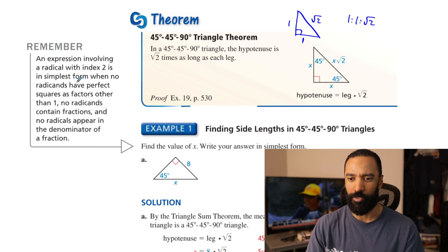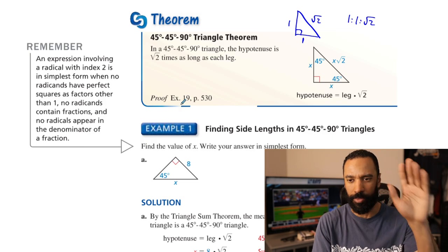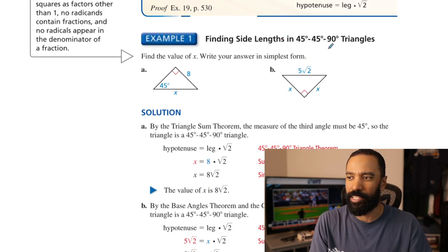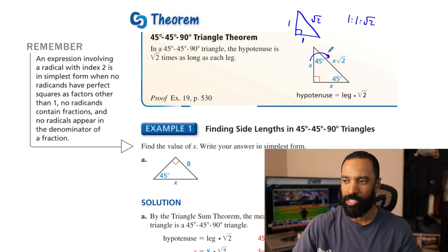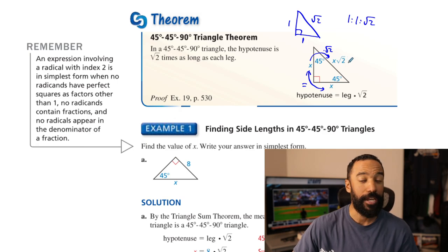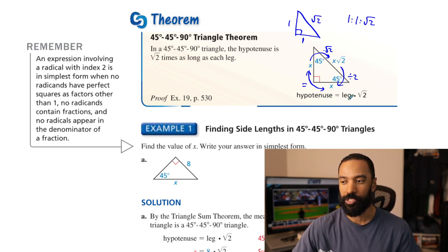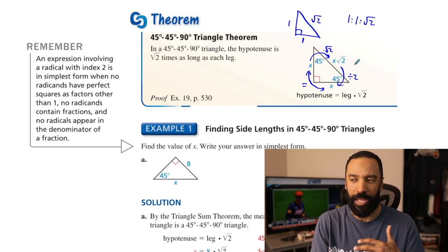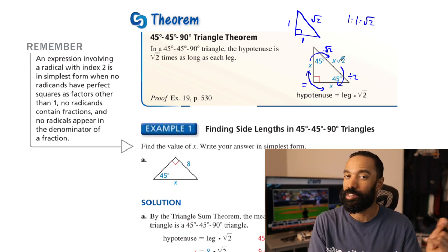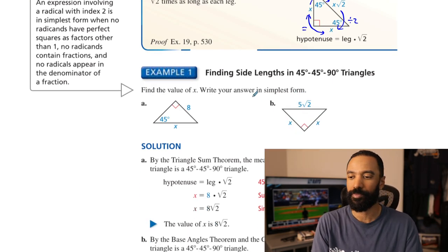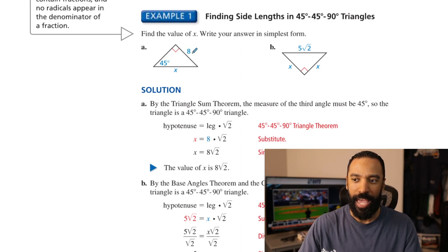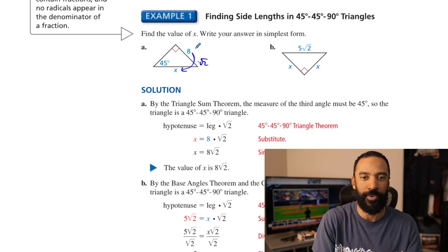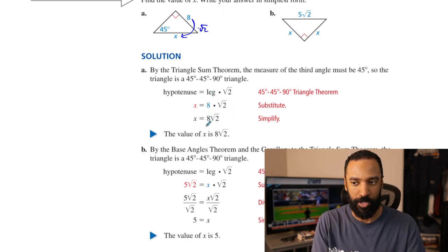Finding side lengths in a 45-45-90 triangle. The basic premise: the hypotenuse is root 2 times larger. Whatever the leg is, you multiply it by the square root of 2 to get the hypotenuse, and the two legs are equal to each other. If I wanted to go from the hypotenuse to a leg, I would divide by the square root of 2. In this first example, we have a right triangle where x is our hypotenuse. 8 is one of the legs, so we multiply by the square root of 2 and get x equals 8 root 2. On the next one, the hypotenuse is 5 root 2 — we divide by root 2 and get 5.